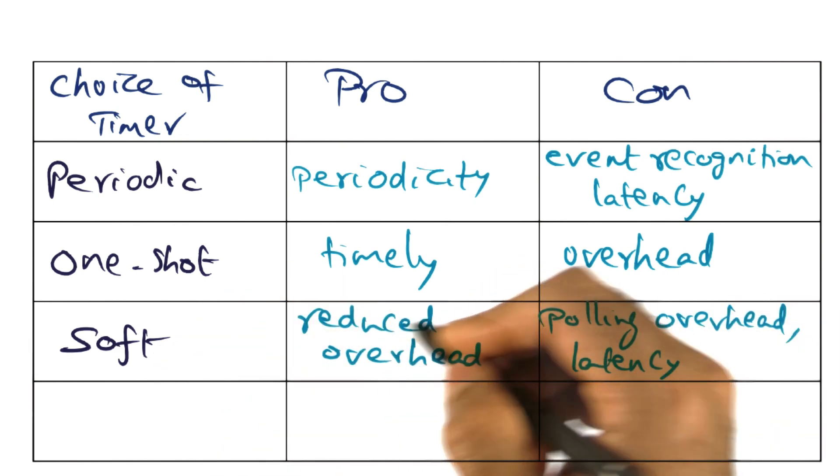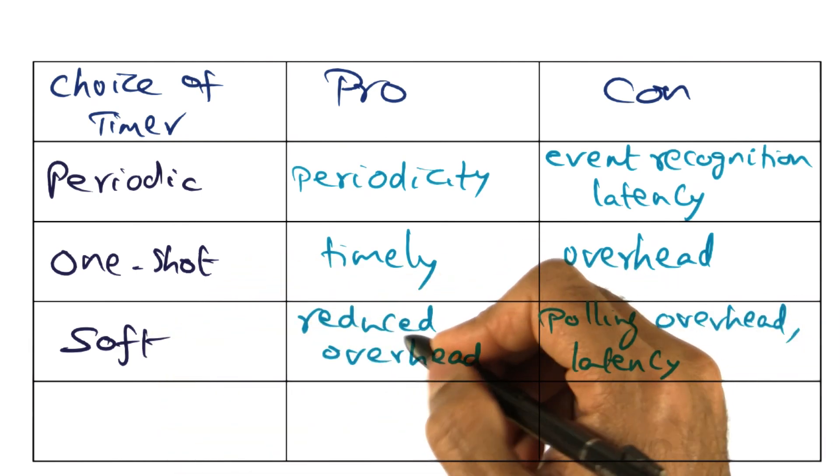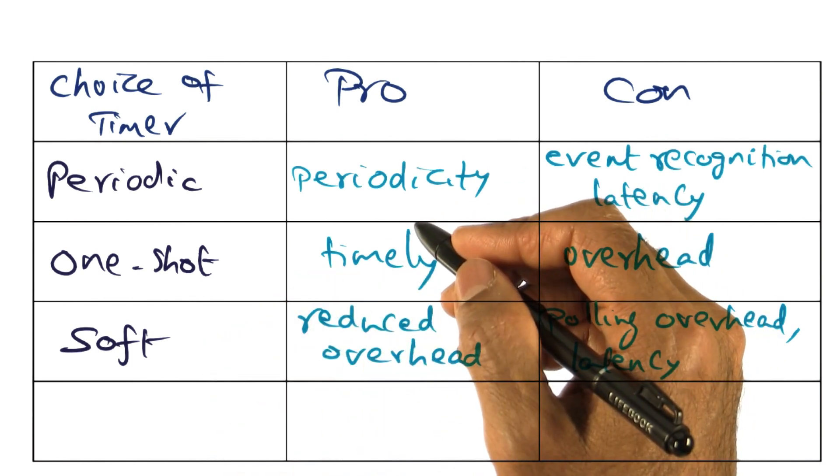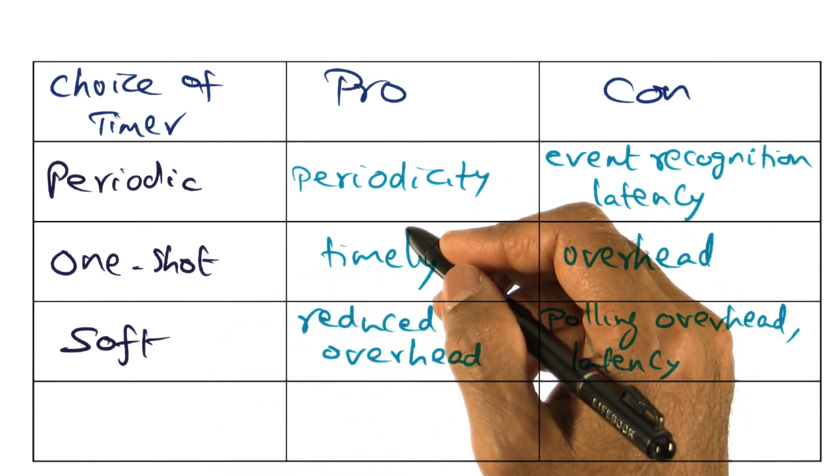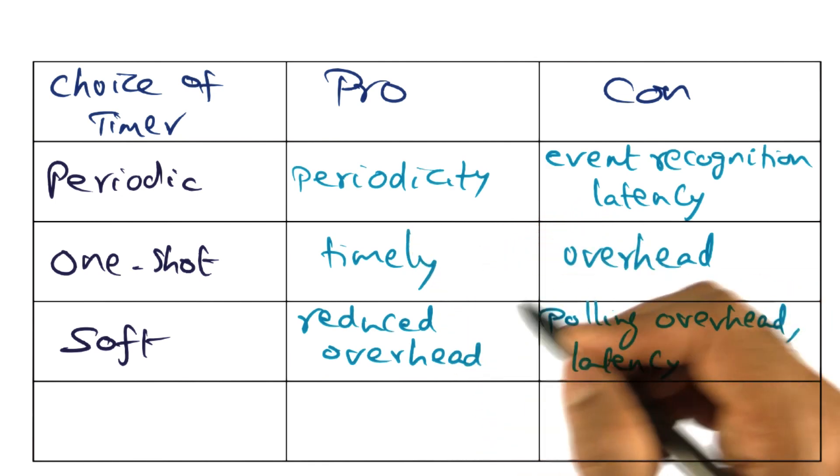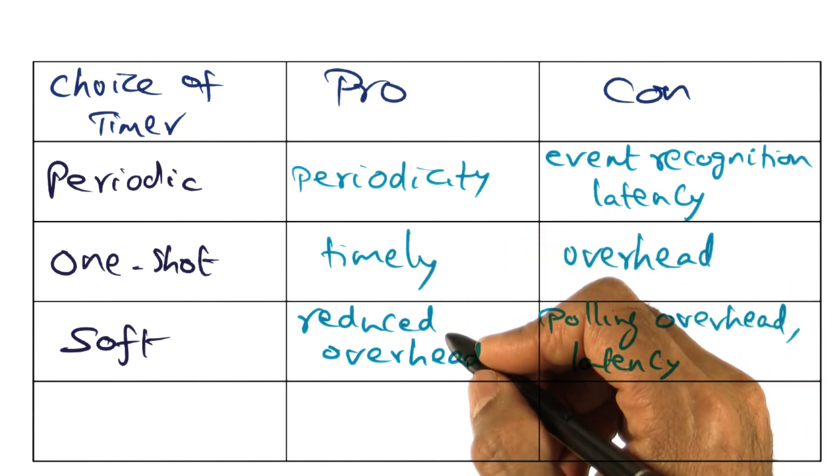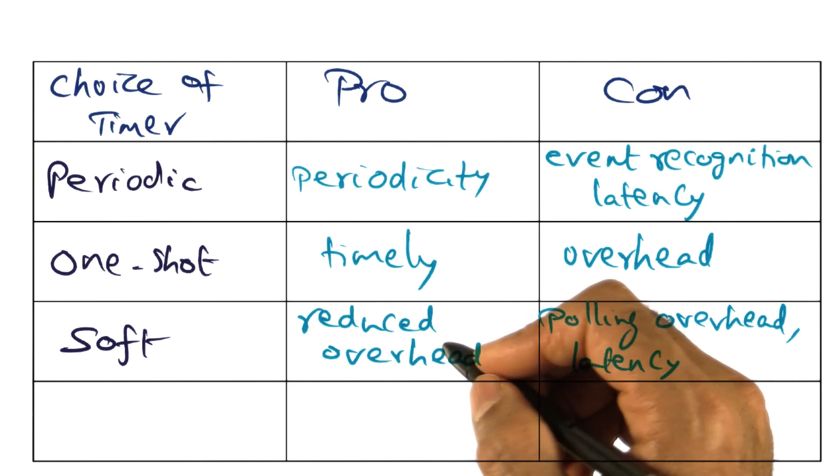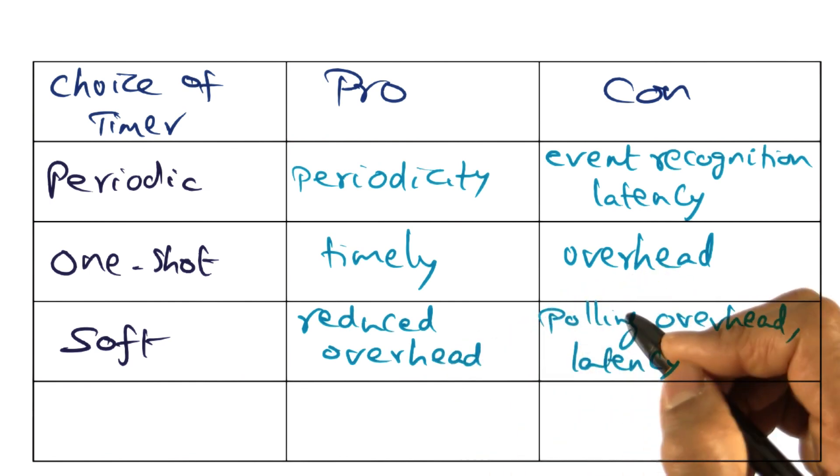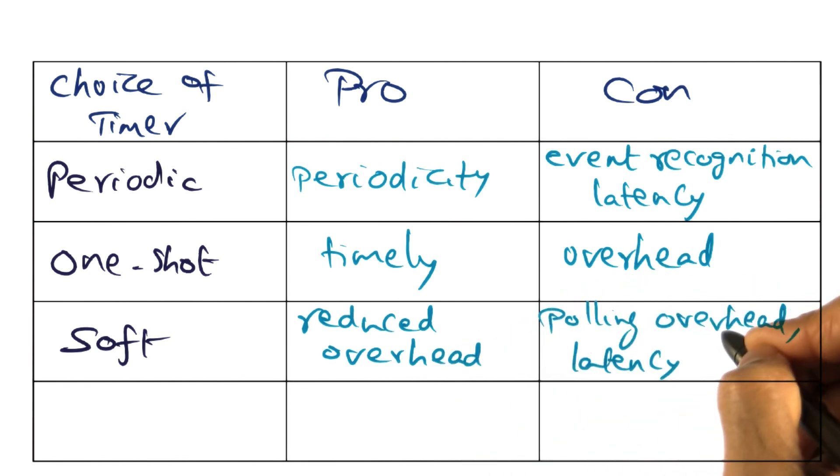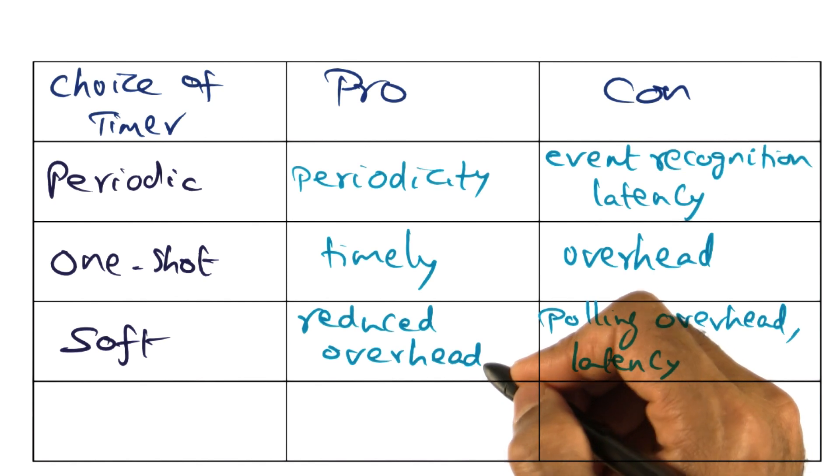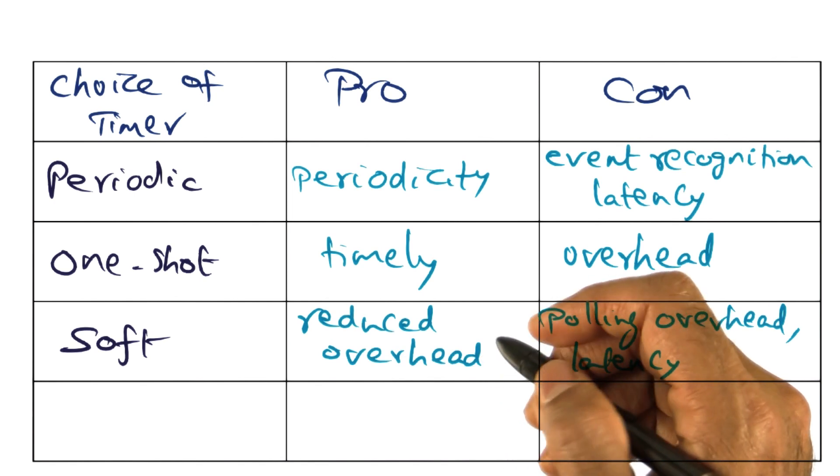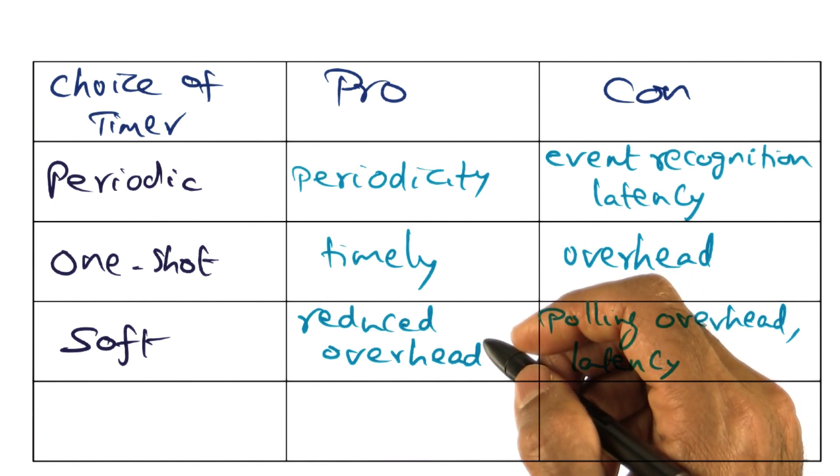But the pro is the fact that you have reduced overhead for soft timers since there are no timer interrupts, per se. But the kernel is using strategic points during its execution, such as system calls or other external interrupts, for instance, a network packet arrival or something like that, as a trigger for looking at the timer data structures to see if any of the events may have expired at that point of time.